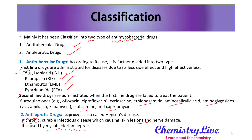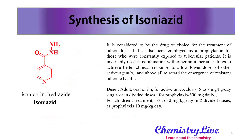Now we will switch to the synthesis. First we will look at the synthesis of isoniazide, which is divided into two parts: the synthesis of nicotinic acid, and the addition of a hydrazide group to that nicotinic acid. First we synthesize nicotinic acid, then the hydrazide reaction gives us isoniazide.